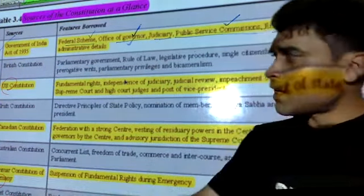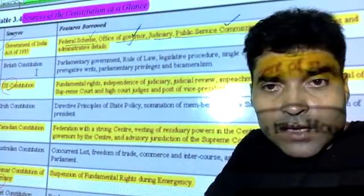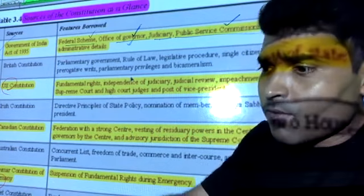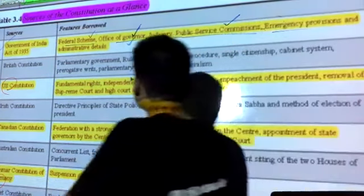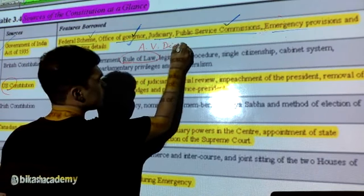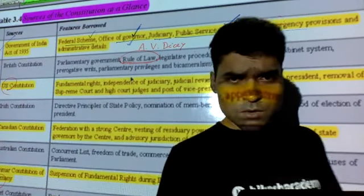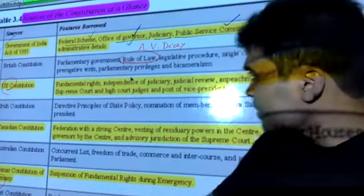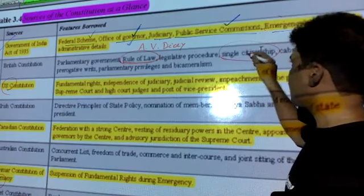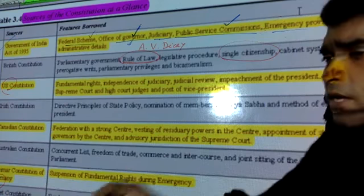Secondly, from the British Constitution — since India was colonized by the British — we borrowed the parliamentary form of government, the rule of law, and the concept of a single citizenship, as India does not have dual citizenship. The cabinet system of government is also borrowed from the British Constitution.